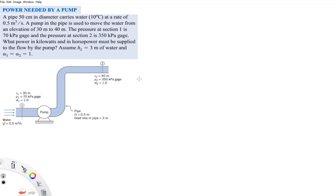In this example we have a pump that carries water from a lower to a higher elevation. The pipe before and after the pump has the same diameter of 50 centimeters, and it carries water at 10 degrees Celsius at a flow rate (discharge) of 0.5 cubic meters per second. The pump moves water from 30 meters to 40 meters elevation. The pressure at section 1 is 70 kPa gauge and at section 2 is 350 kPa gauge. We need to calculate the power input in kilowatts and horsepower.